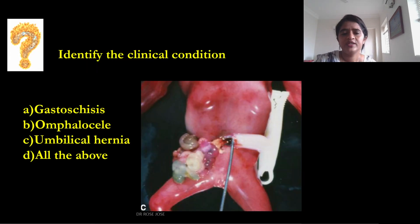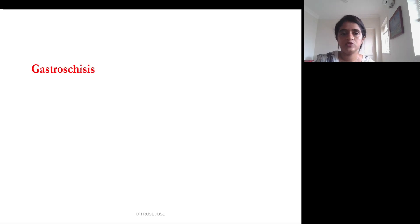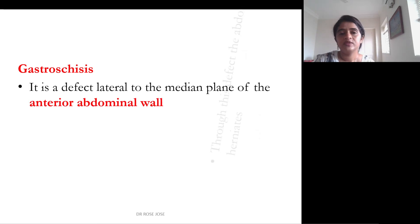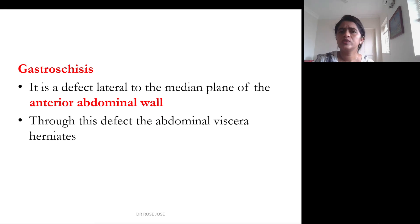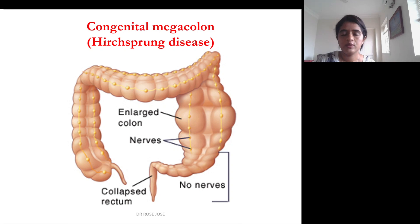Gastroschisis is identified by loops of intestine lying outside the abdominal cavity but without any covering — unlike omphalocele. It is due to a defect in the anterior abdominal wall, usually seen lateral to the median plane, through which abdominal viscera herniate. Gastroschisis is not usually associated with chromosomal anomalies, whereas omphalocele is.